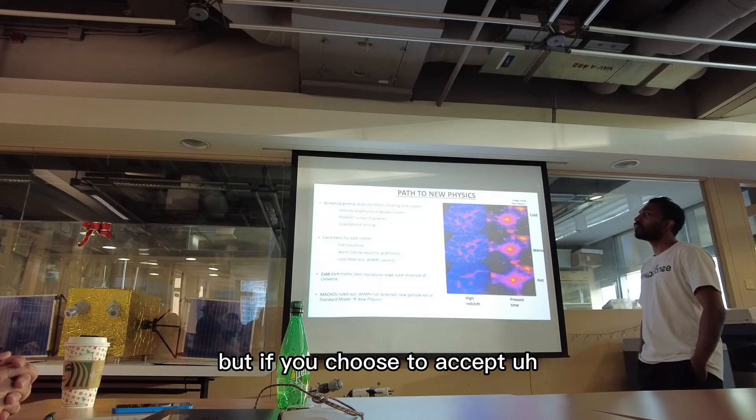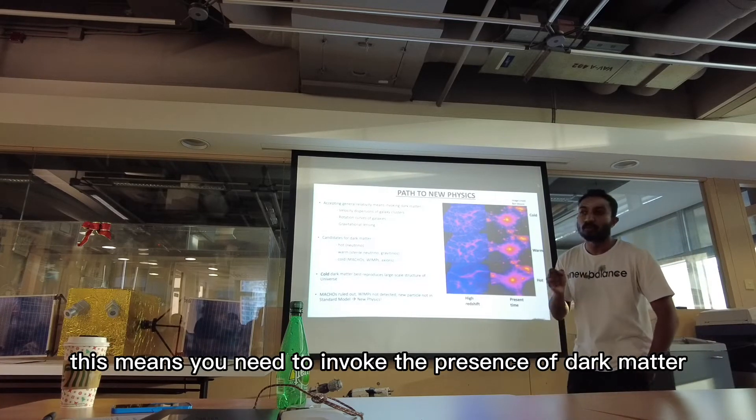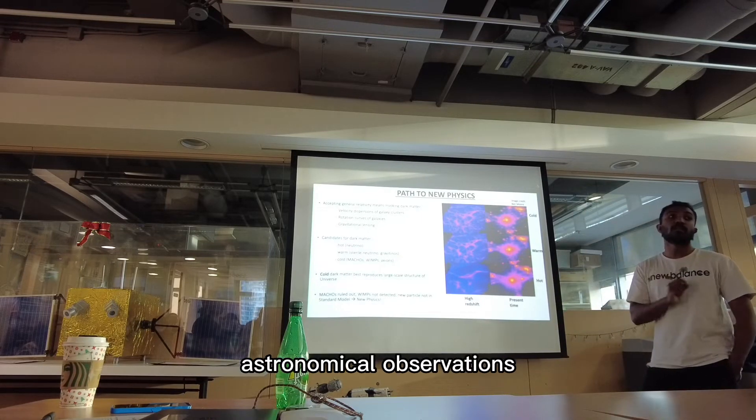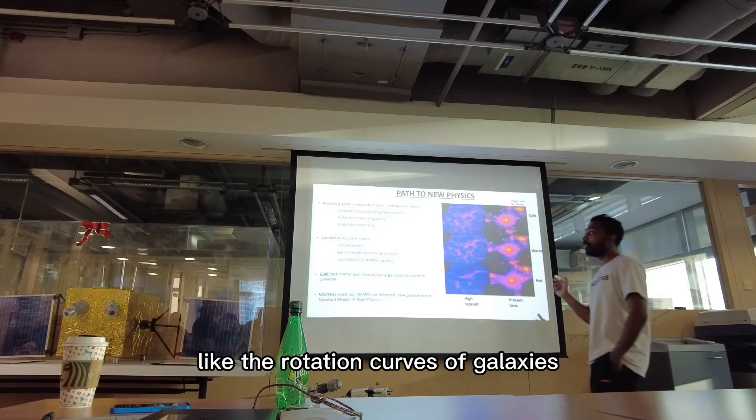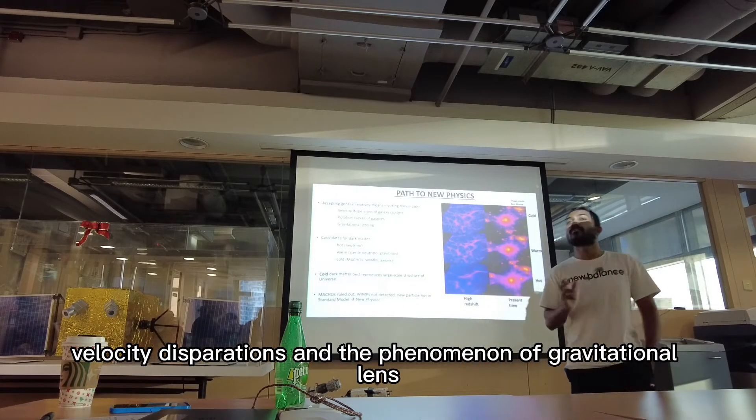But if you choose to accept Einstein's theory of general relativity, this means you need to invoke the presence of dark matter to explain certain key astronomical observations like the rotation curves of galaxies, velocity dispersions, and the phenomenon of gravitational lensing.